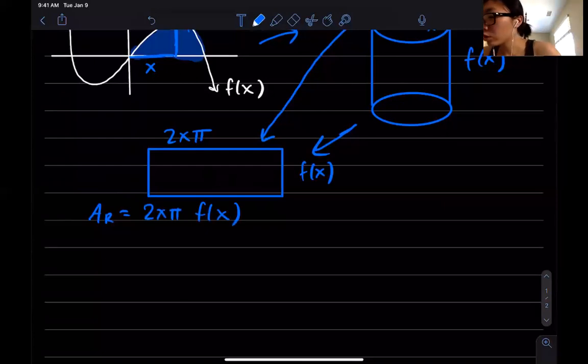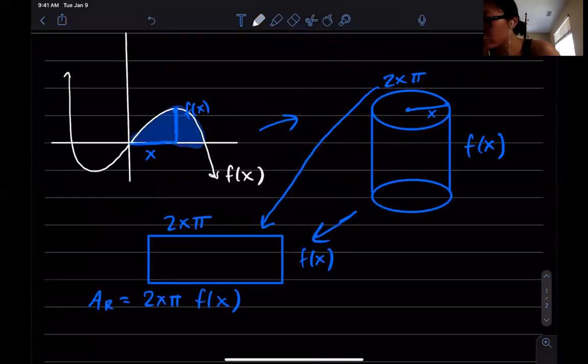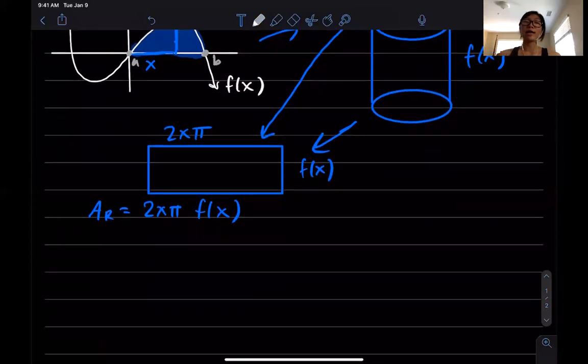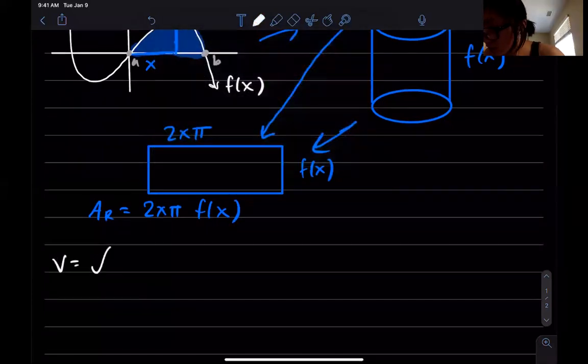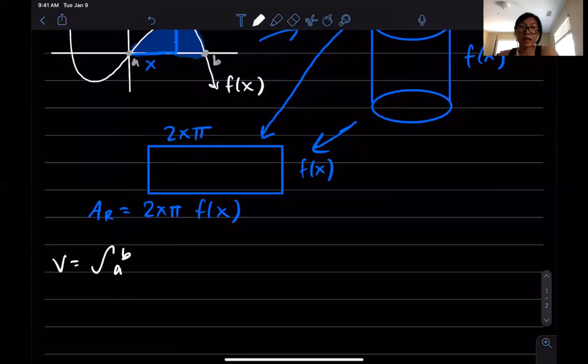Since I'm doing volume, I'm going to need a definite integral. Let's say this is the region given by—we'll call this a, even though it's probably zero—call this b. I need to take infinitely many cylindrical shells from a to b. That's gonna be a definite integral from a to b times the area of all these cylinders or the cylindrical shells, so that's gonna be times 2x pi f of x dx.